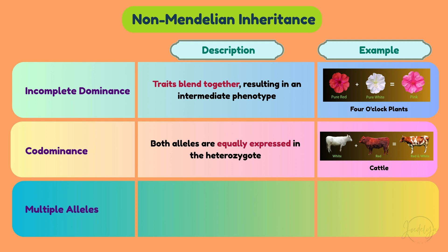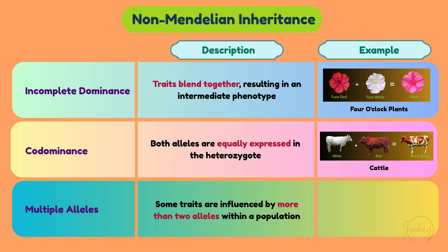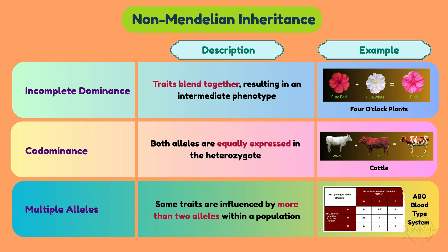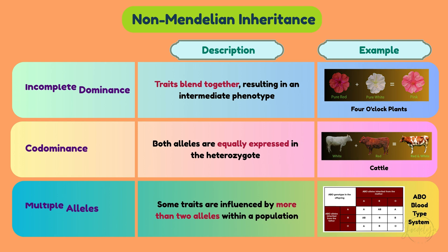Multiple alleles: some traits are influenced by more than two alleles within a population. A prime example is the ABO blood type system in humans, where alleles A, B, and O combine in different ways to produce the four blood types: A, B, AB, and O.